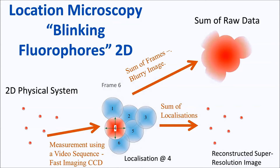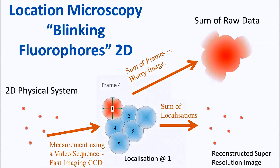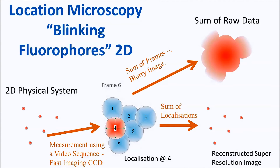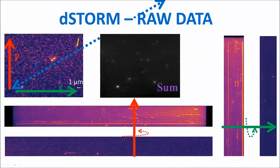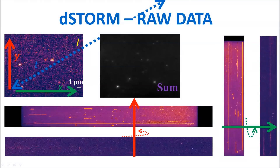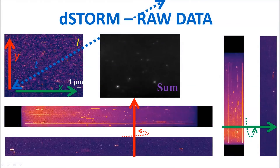Let's show this in two dimensions, because naturally you have more than two points to form an image. We're localizing each single molecule blink, and again we can plot the sum of localizations, which gives us a super-resolution image equivalent to the physical system. Or we can plot the sum of all images and we get this blur, which is equivalent to the standard diffraction-limited image that one would normally measure.